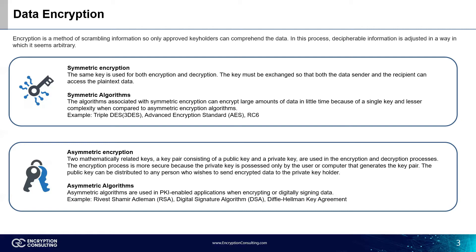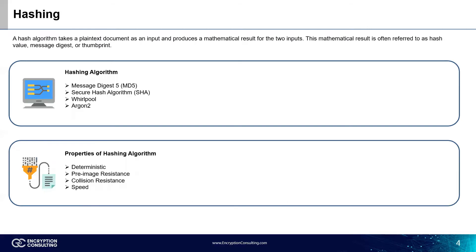Now let's move on to discuss hashing. A hash algorithm takes a plain text document as an input and produces a mathematical result. This mathematical result is often referred to as a hash value, message digest, or thumbprint. Strong hashing ensures data integrity, security against unauthorized modifications, and protection of stored passwords.